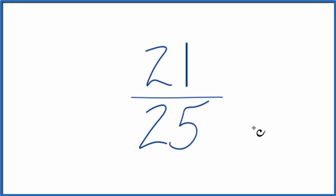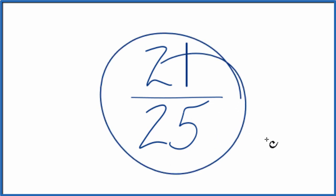Turns out that the only common factor between 21 and 25 is 1, and that means that 21 25ths, this fraction, it's already simplified. It's in its lowest terms.